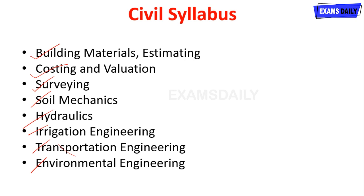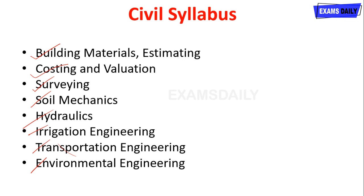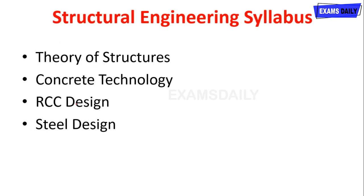For example, in Paper 1 they may ask 'what is a resistor or capacitor,' but in Paper 2 they will give a value and ask you to calculate the answer. So the toughness of questions varies between Paper 1 and Paper 2, but the syllabus is the same. You should give importance to your subject stream for this Junior Engineer examination.